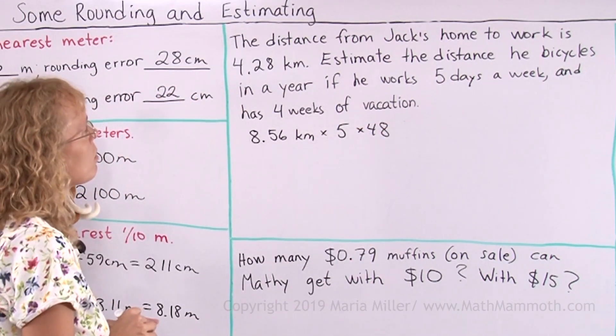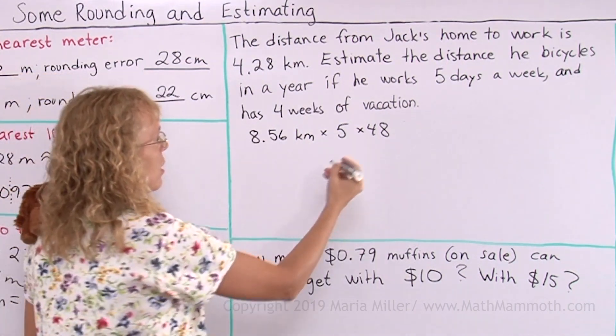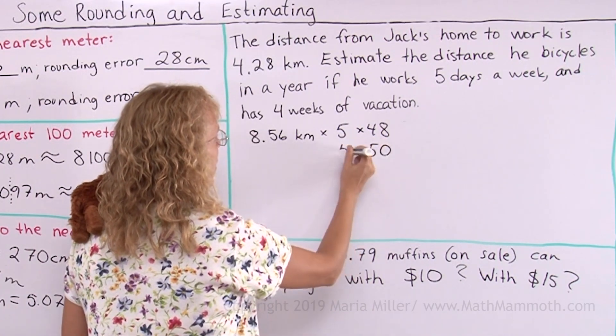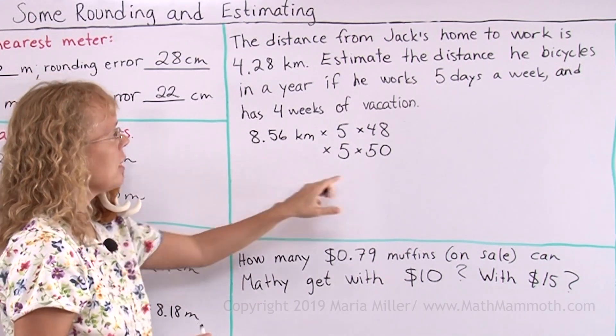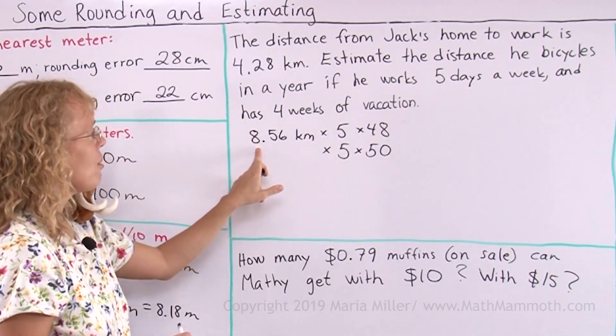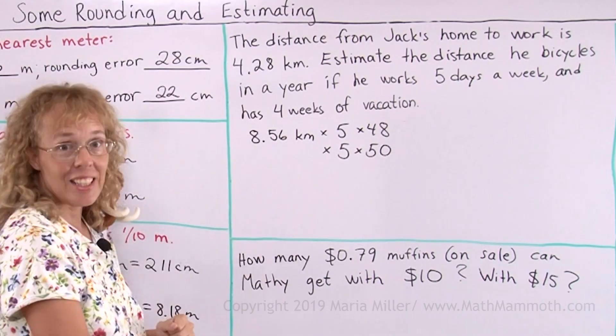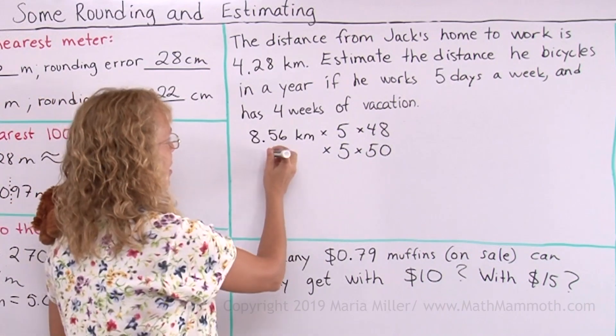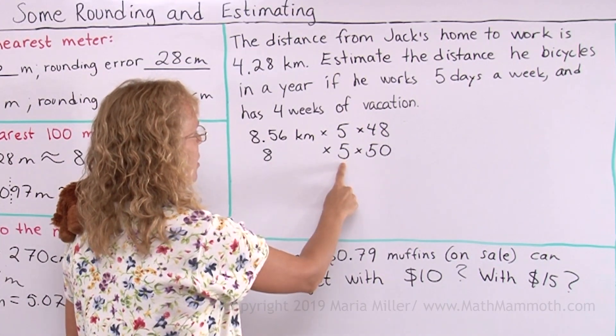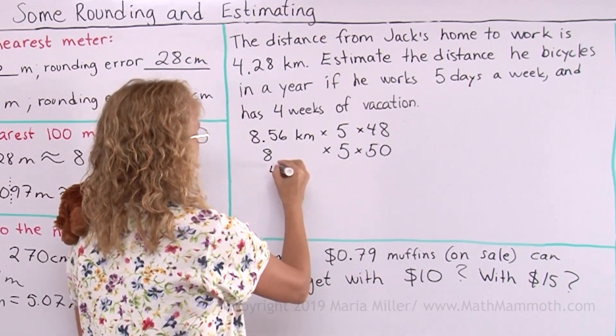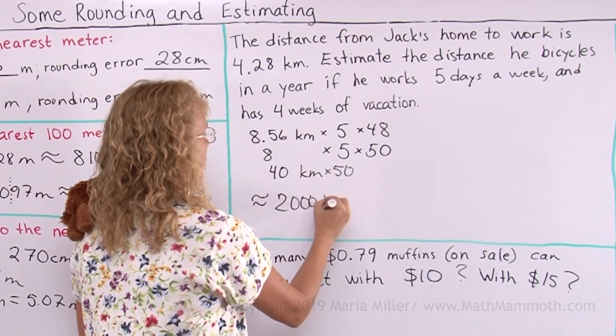So that is our multiplication to do. And now to estimate we will round those numbers. This number can be rounded to 50 and 5. Now this one, I rounded 48 up to 50. If I round this up to 9 I think we are going to overestimate. So let me try rounding that down to 8, so that the error of estimation will be less. And now we will have 8 times 5 is 40 times 50. 40 kilometers times 50, which is we get about 2,000 kilometers.